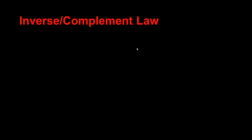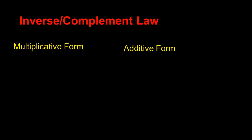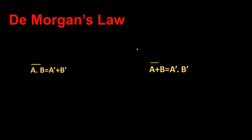Then we have the inverse law. It has two forms — additive and multiplicative. The first one is A dot A-bar. And then De Morgan's law: A dot B entire bar equals A-bar plus B-bar, and A plus B entire bar equals A-bar dot B-bar.